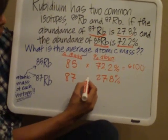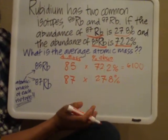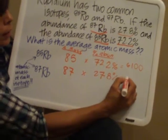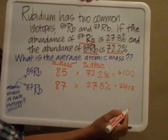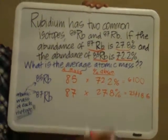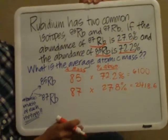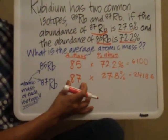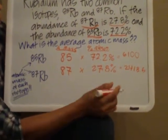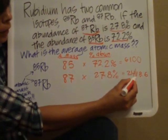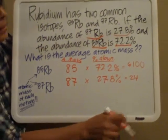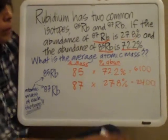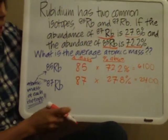And then I'm going to do the same thing below. 87 times 27.8. In the calculator, you're going to get 2,418.6. Again, considering significant figures. 87 has two significant figures. So your answer can only have two. One, two, line down. 2,418.6 becomes 2,400.